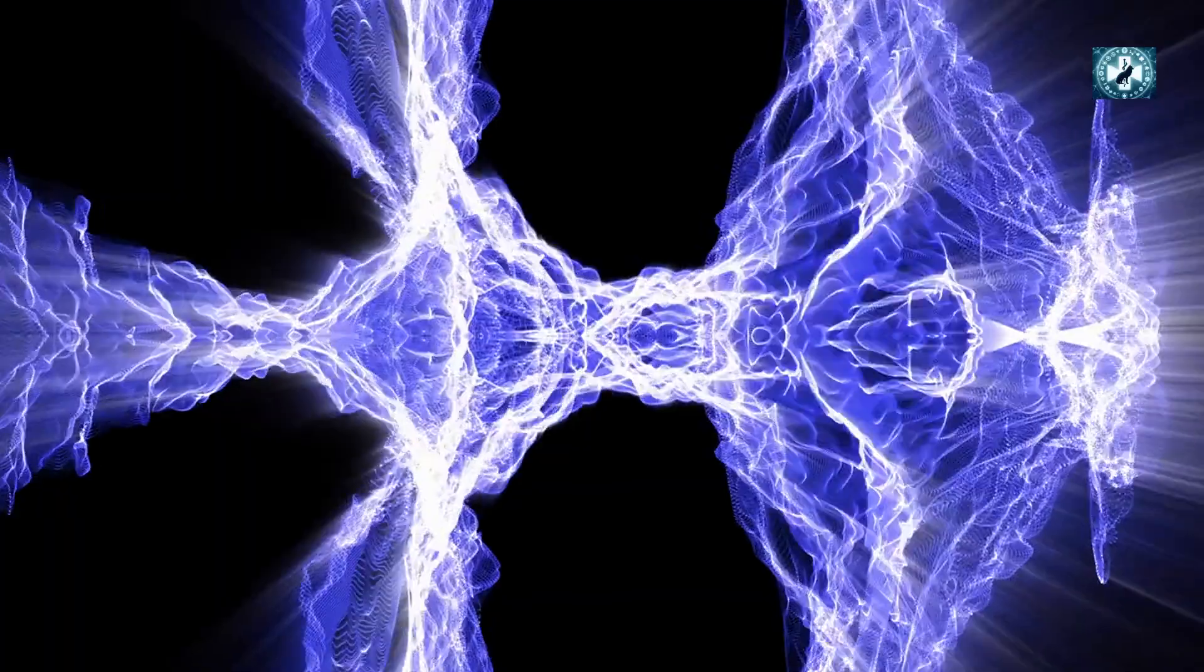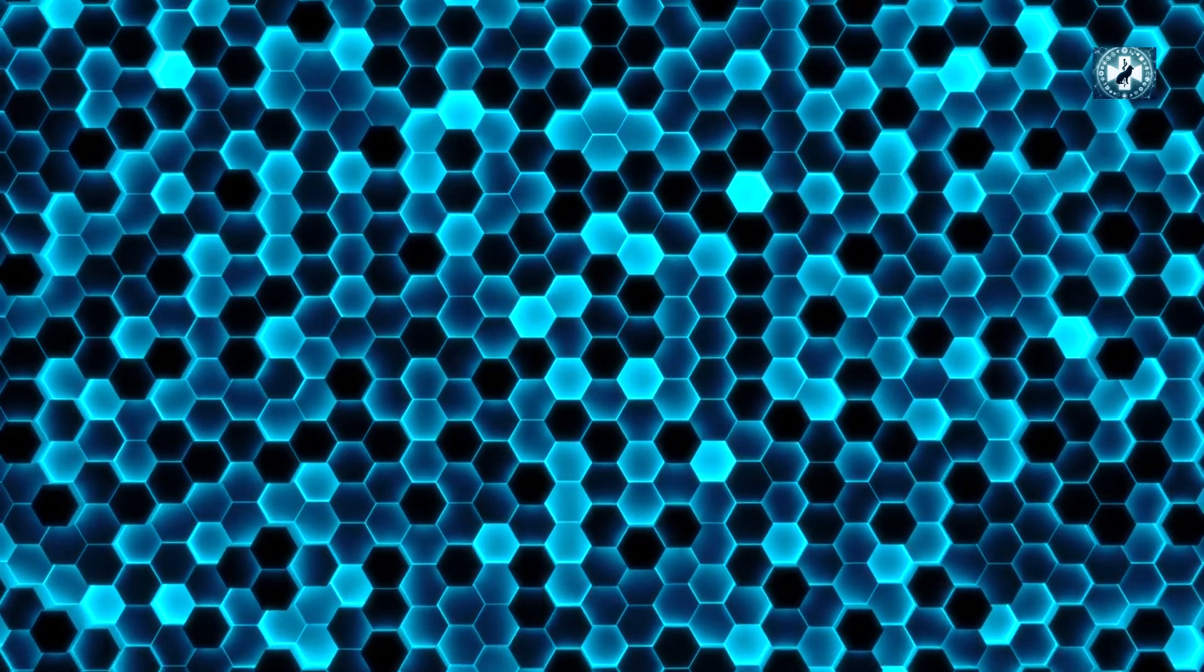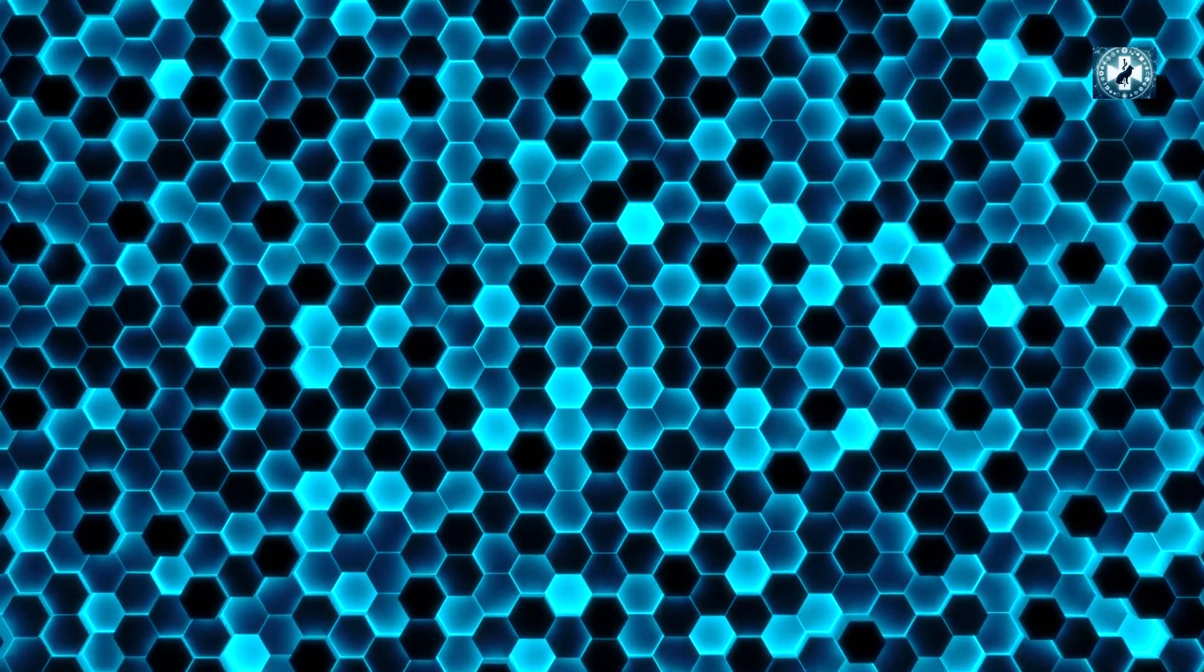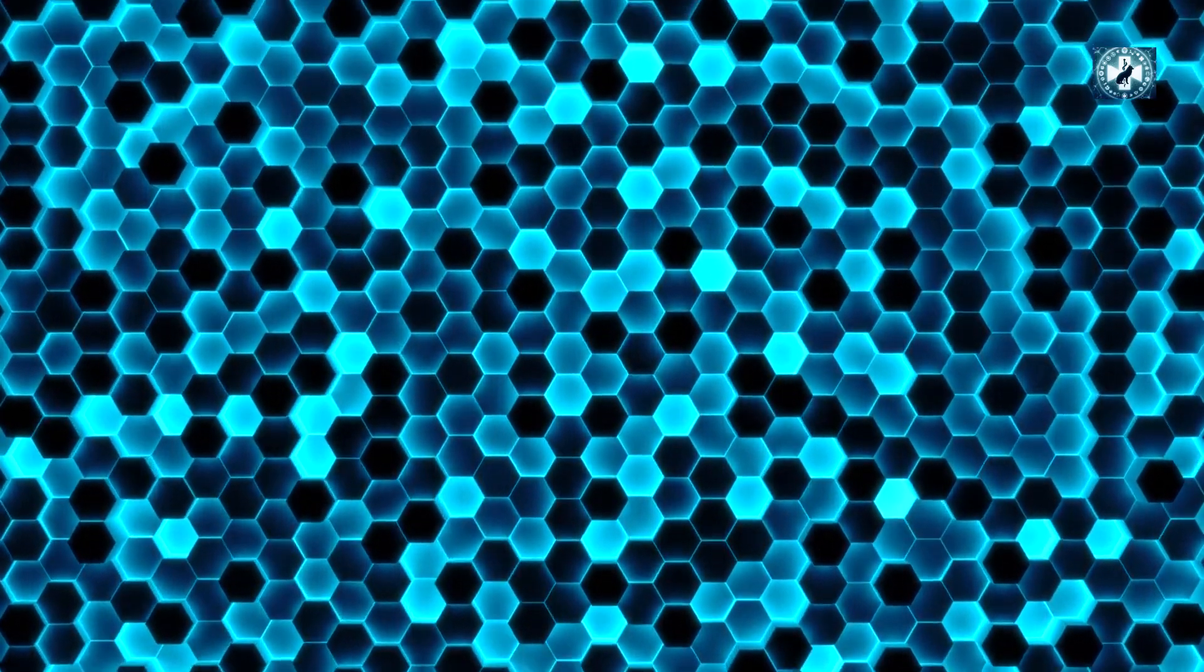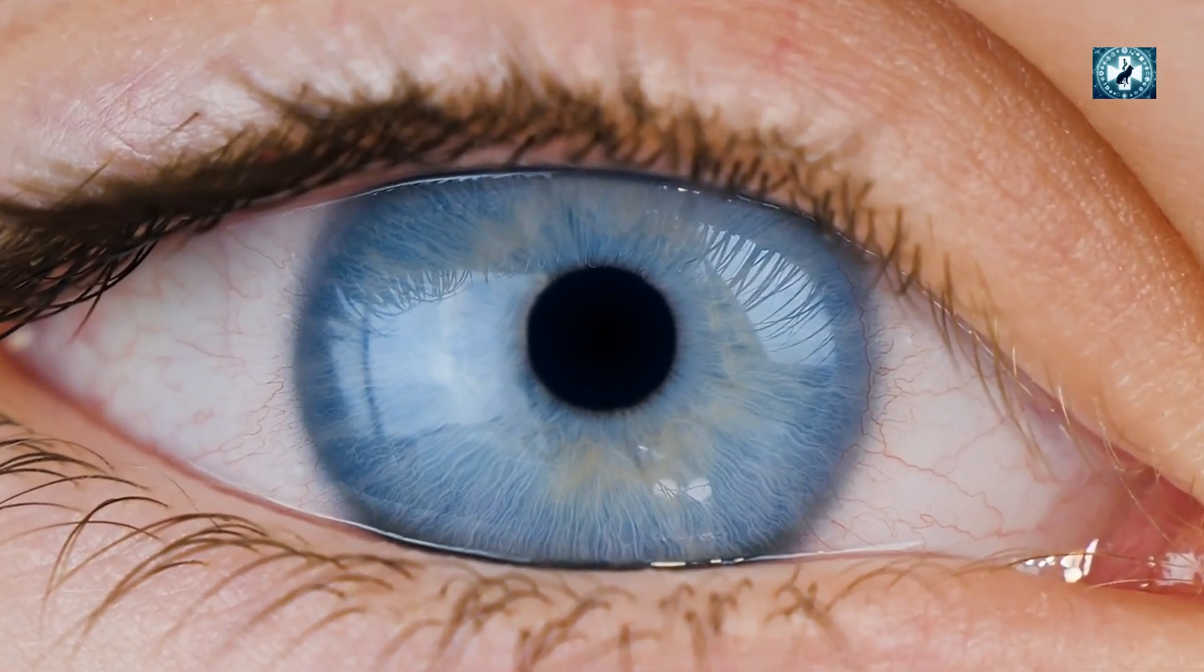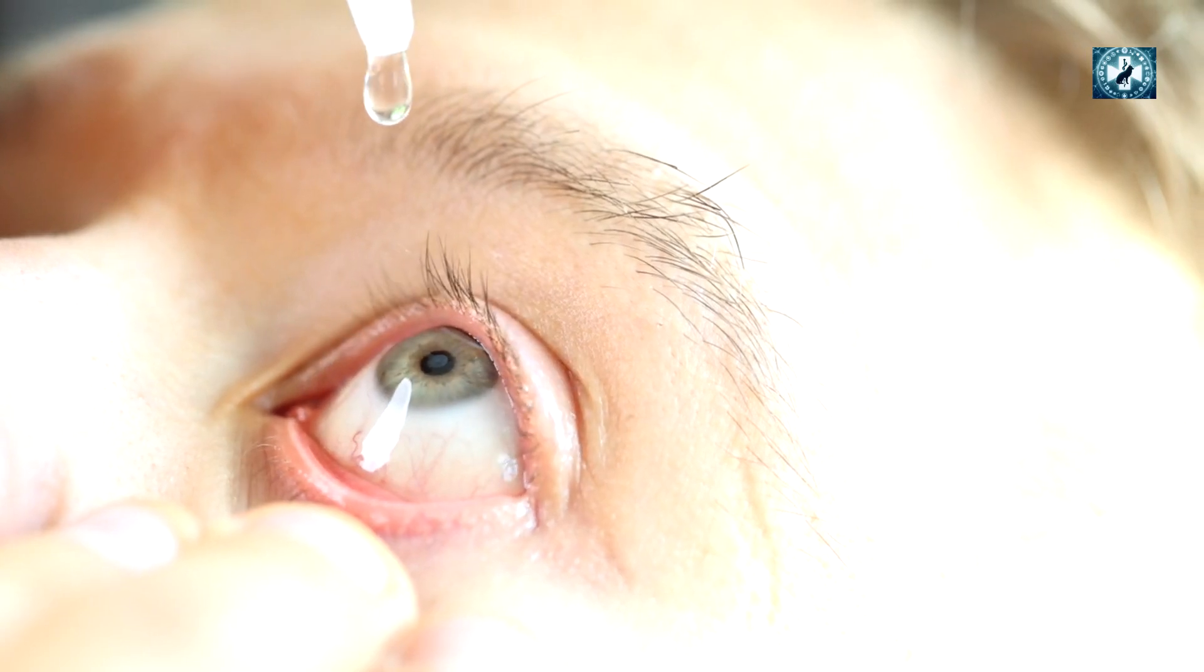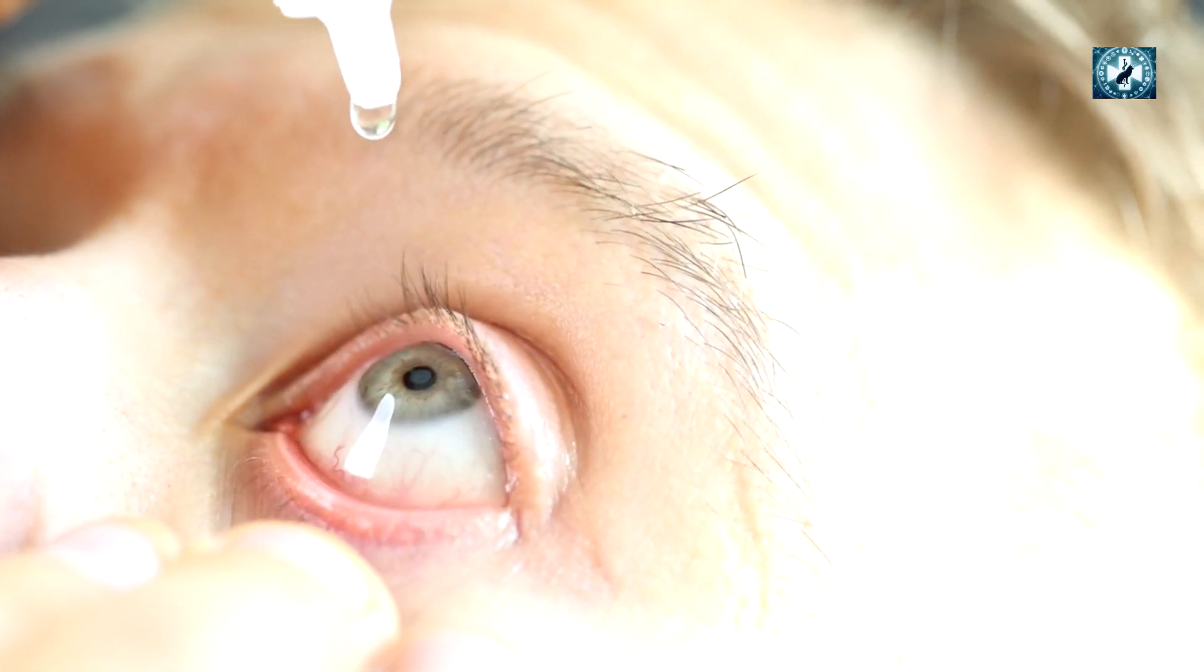N-acetylcarnosine eye drops function through a mechanism rooted in their antioxidant properties. Oxidative stress caused by an imbalance between free radicals and antioxidants in the body is a significant contributor to the formation and progression of cataracts. NAC eye drops aim to counteract this oxidative stress directly within the lens of the eye. When applied, the eye drops penetrate the cornea and deliver N-acetylcarnosine to the lens.